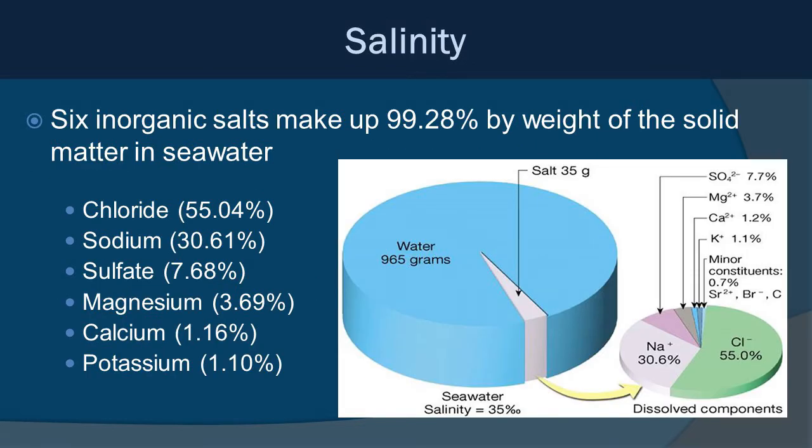There are six inorganic salts that make up 99.28% by weight of all the solids in seawater. The first two are the most common: sodium at 30% and chloride at 55%. Sulfate, magnesium, calcium, and potassium also rank among the top. After that there are many minor inorganic constituents that also play a big role in the biological processes of the ocean — for example, what a crab needs to build its exoskeleton, or what a coral needs to build its skeleton in the reef.